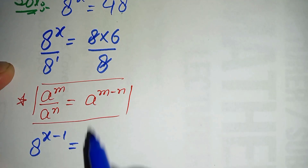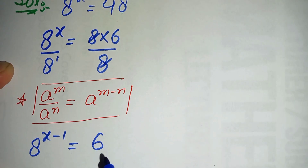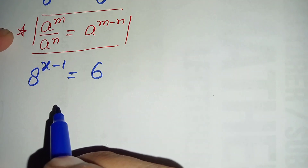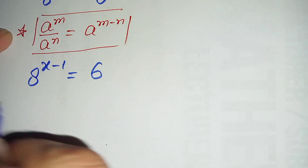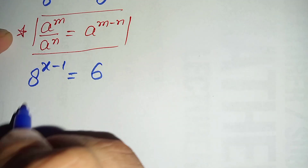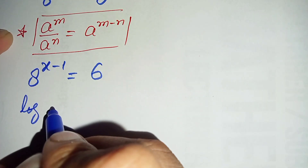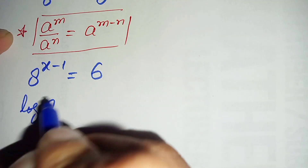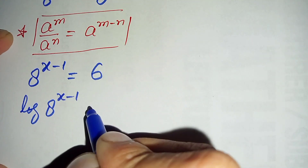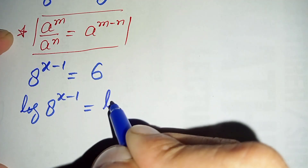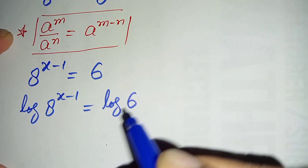Now only 6 remains on the right hand side. So we have 8 raised to power (x − 1) is equal to 6. Next, we will take the common log on both sides: log of 8 raised to power (x − 1) is equal to log of 6.